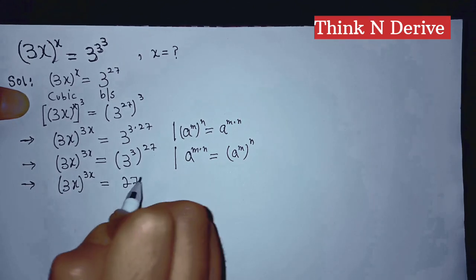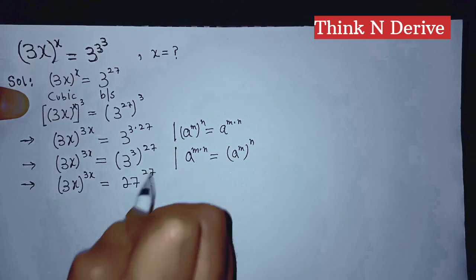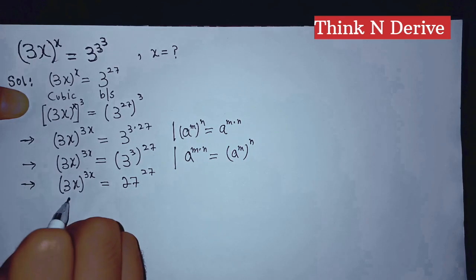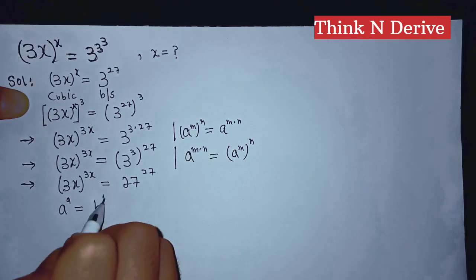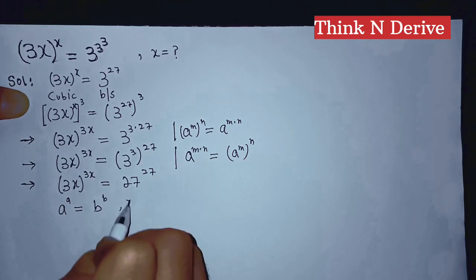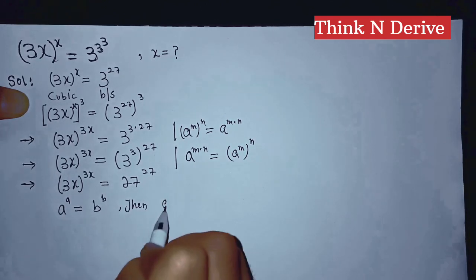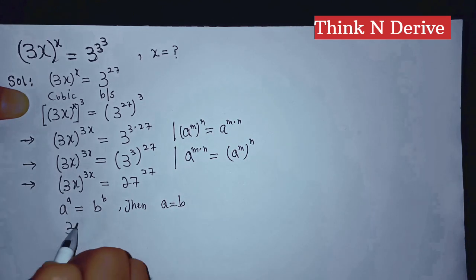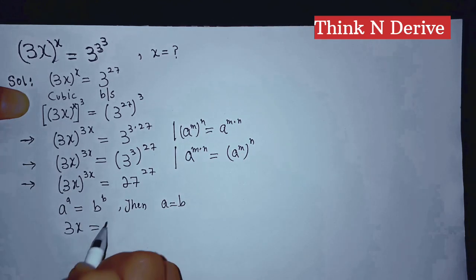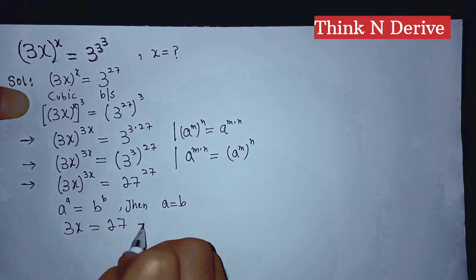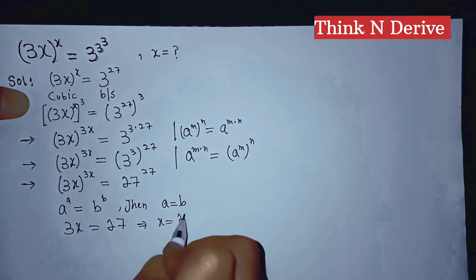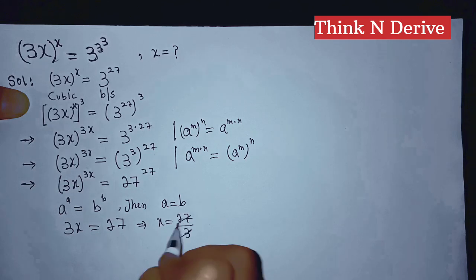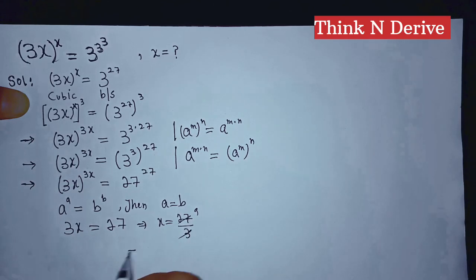Now we know if a to the power a is equal to b to the power b, then a is equal to b. That means 3x equals 27, which implies that x is equal to 27 divided by 3, that means x is equal to 9.